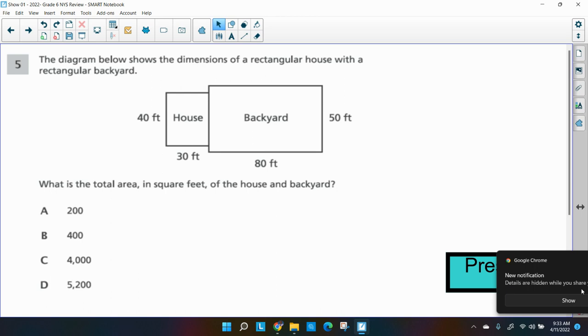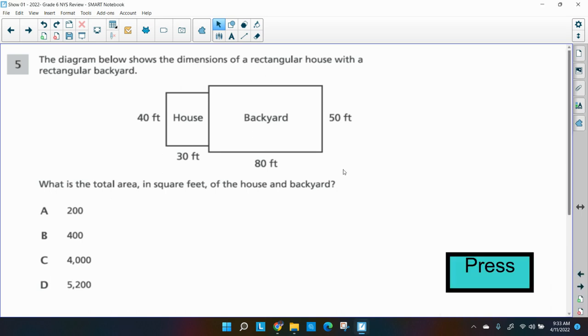All right, let's get into it. The diagram below shows the dimensions of a rectangular house with a rectangular backyard. So there's the house, 40 feet, 30 feet, backyard, 90, 80 feet, 50 feet. So they want to know what is the total area in square feet of the house and backyard.